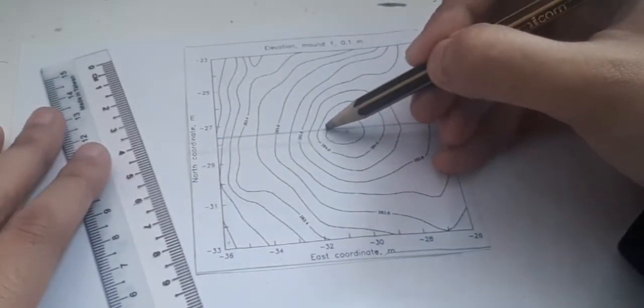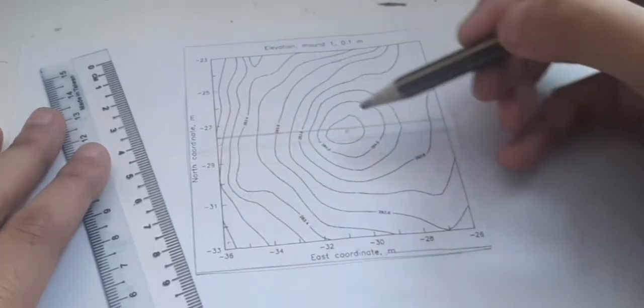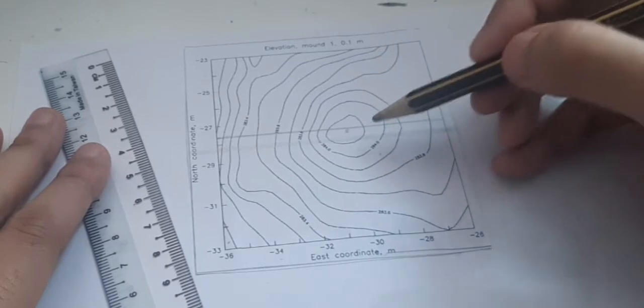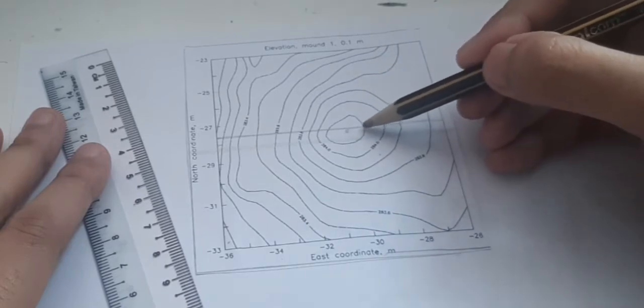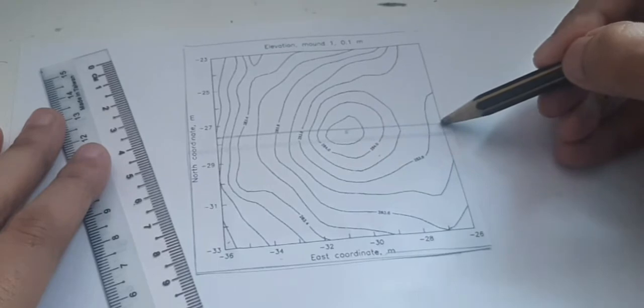So as you know, this is the highest part and this will be the lowest part. Same goes to the right. This will be the highest part. This will be the lowest part.